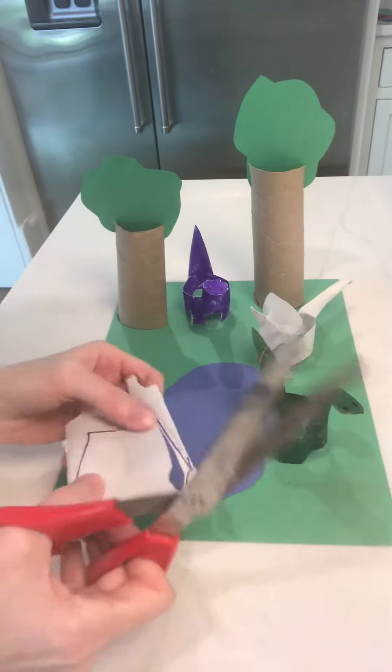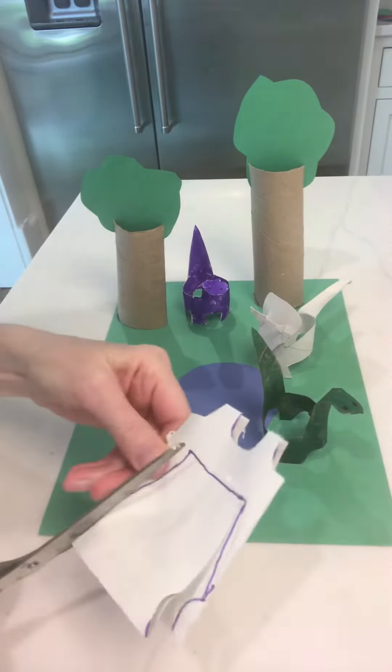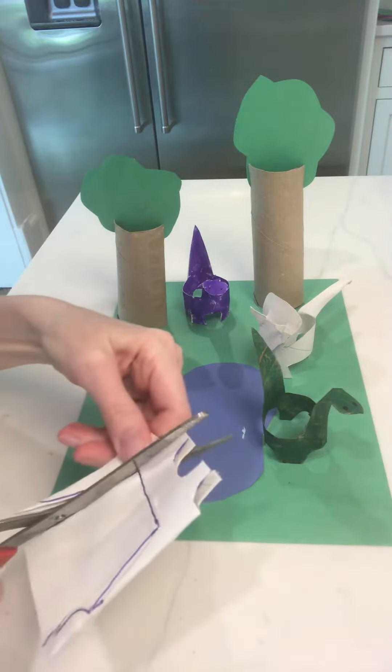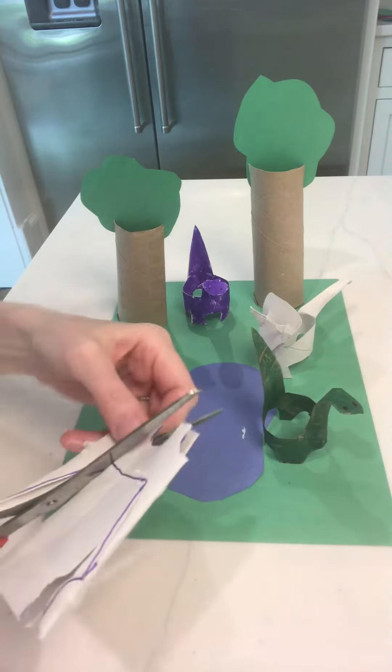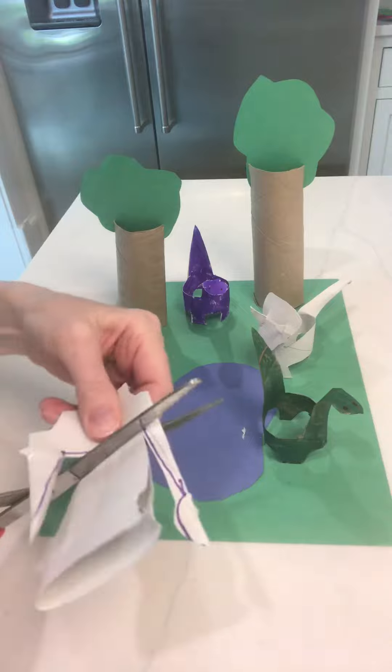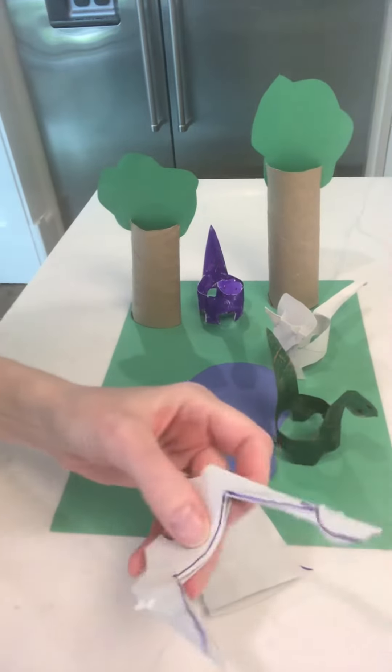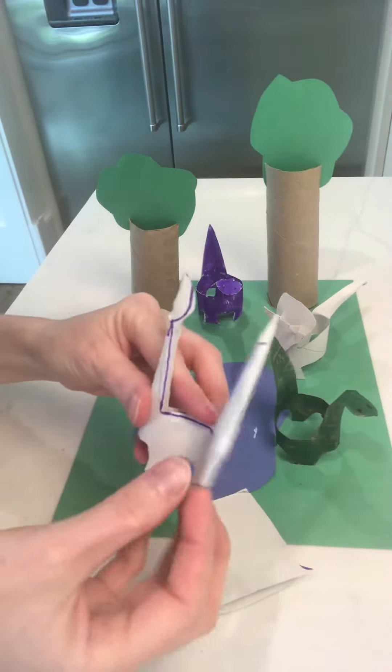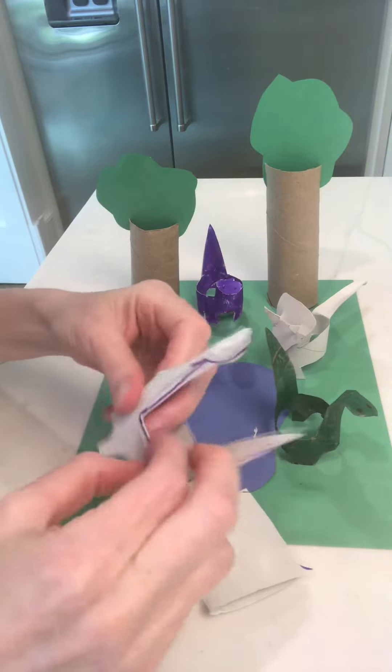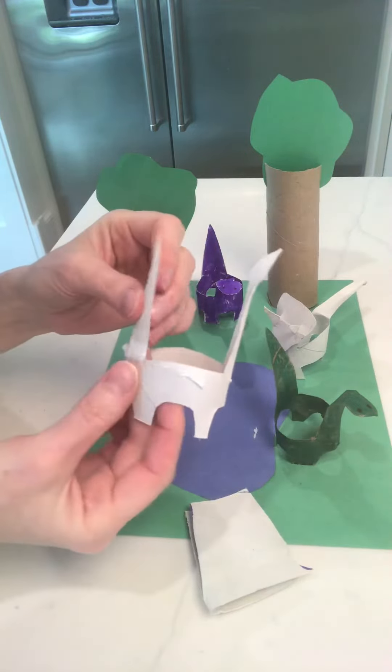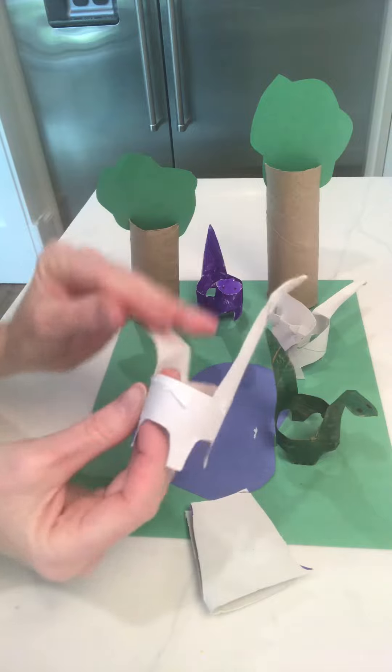Okay, so now we're cutting down our neck and then our tail. Just cut along those lines that we made and you'll see very soon that you have created your very own dinosaur made out of a toilet paper roll.